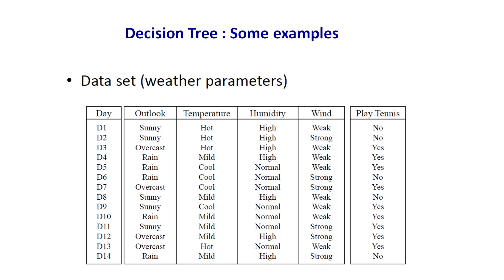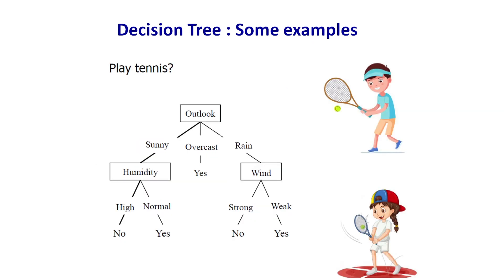Students, welcome back to the second part of the lecture. We were talking about decision trees. I gave you this table on screen showing weather data for two weeks, day 1 to day 14, and a decision has to be made whether we can go and play tennis or not. That depends on this tree structure, which is called the decision tree for playing tennis.